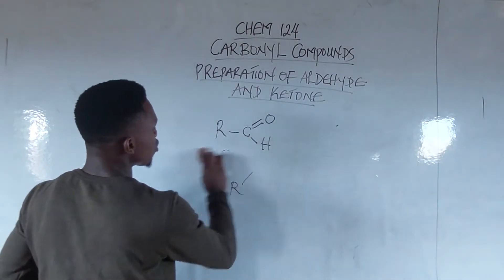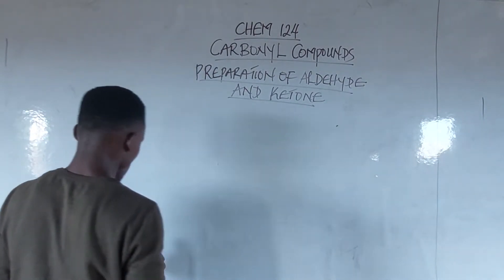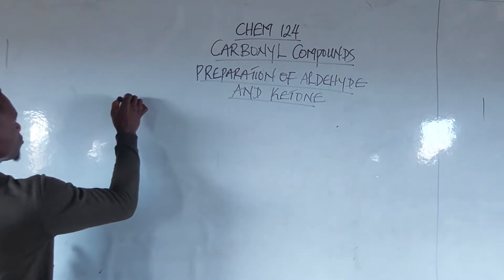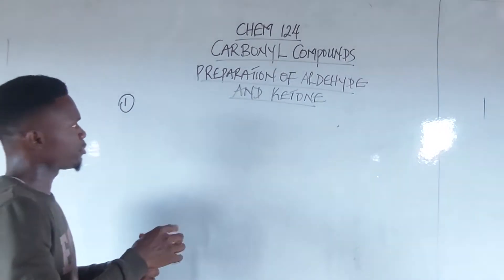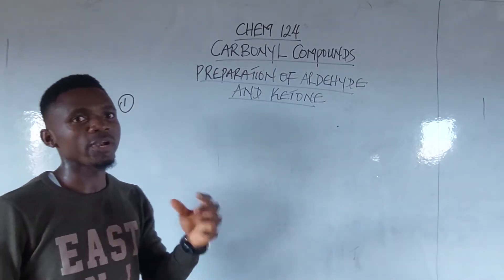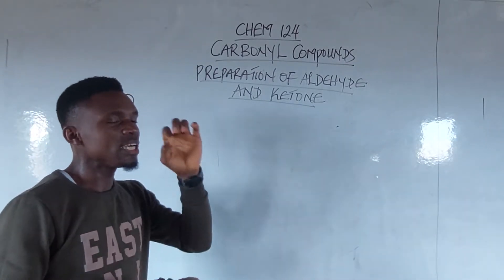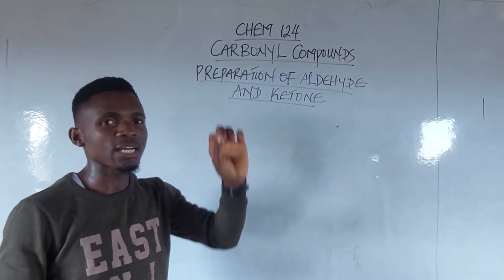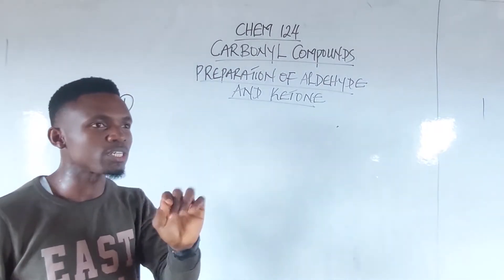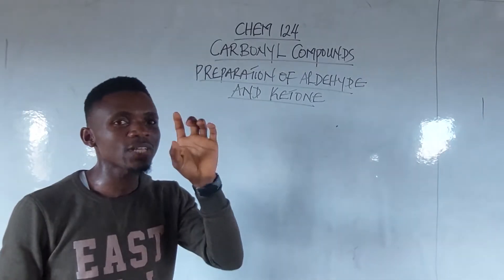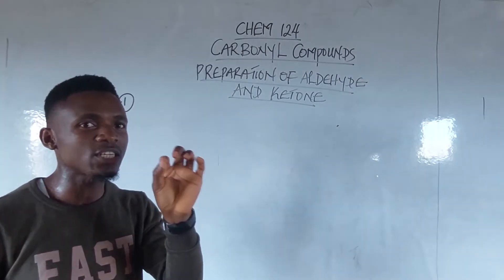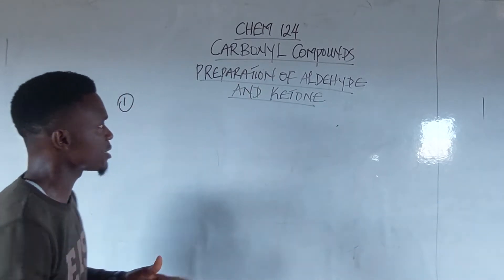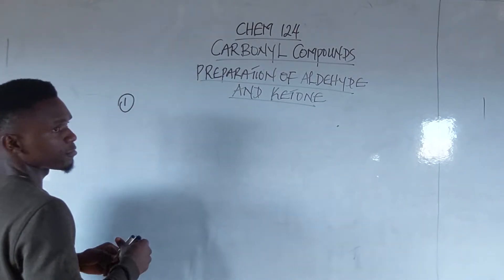Now let us discuss how aldehydes and ketones are prepared. Number one: in my previous class I told you that when primary alcohol is oxidized in the presence of potassium permanganate and potassium heptaoxodichromate(VI) — those are the two oxidizing conditions that can be used to oxidize primary and secondary alcohols.